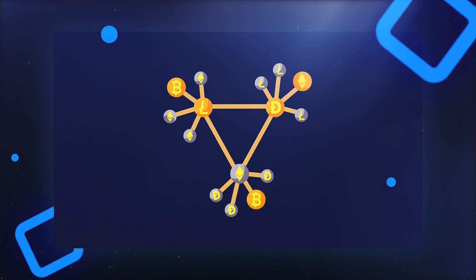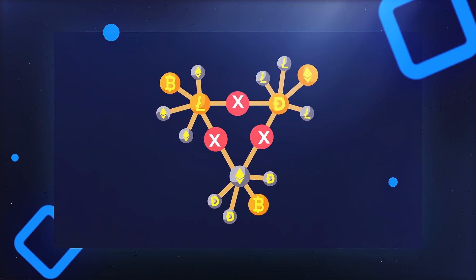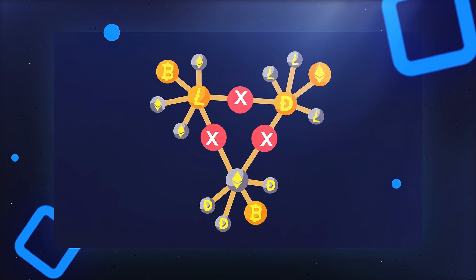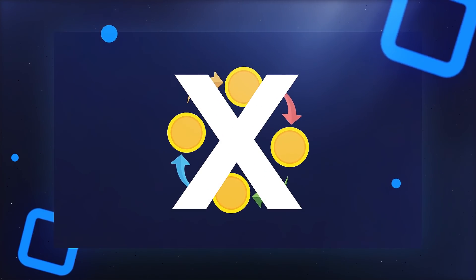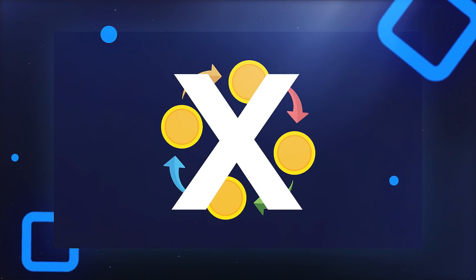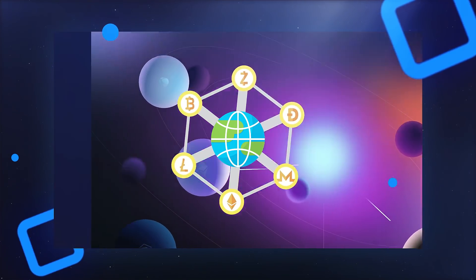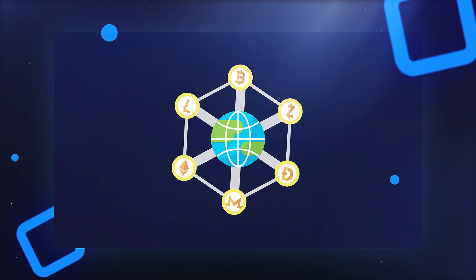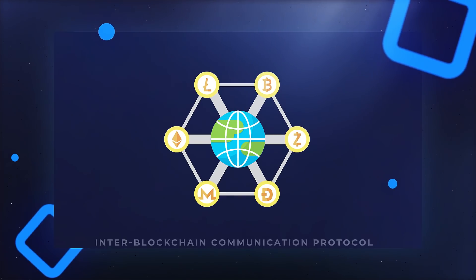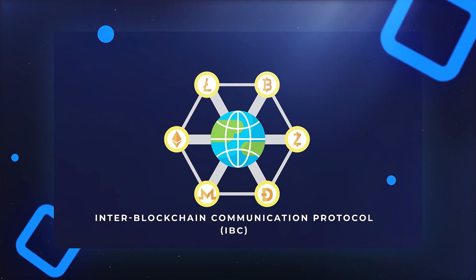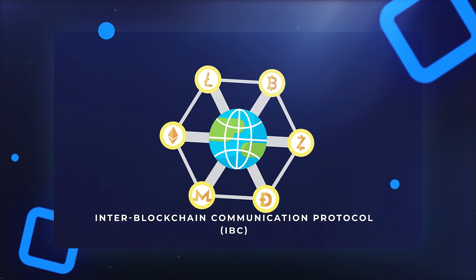When it comes to interoperability, almost all existing blockchains do not connect with each other easily — they are siloed and unable to transfer assets between them. Cosmos Network's main goal is to create an internet of blockchains. They have made it possible for blockchains to communicate with one another using the Inter-Blockchain Communication protocol, commonly referred to as IBC.